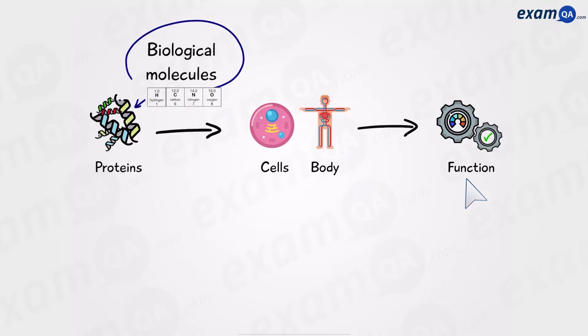Now proteins can be generally classified into three categories. Enzymes, for example pepsin. Enzymes speed up chemical reactions.